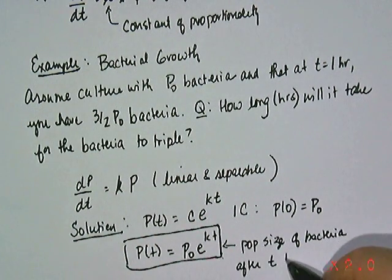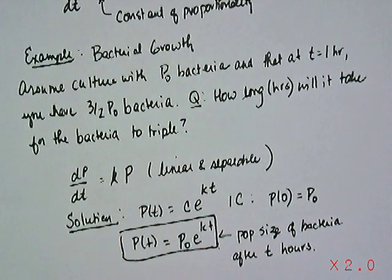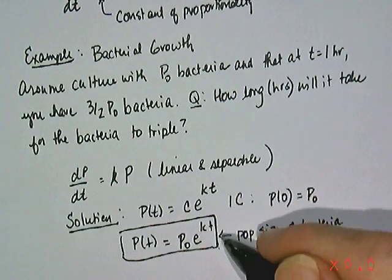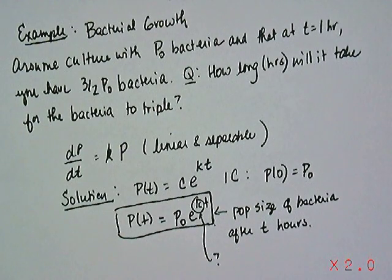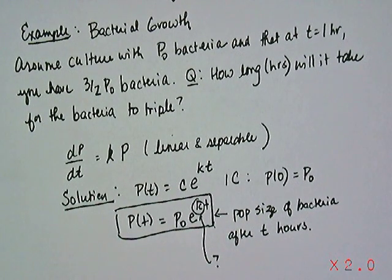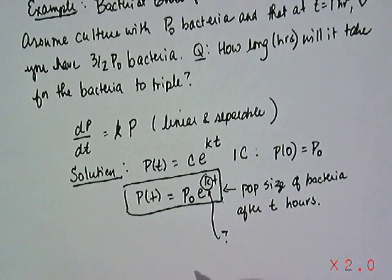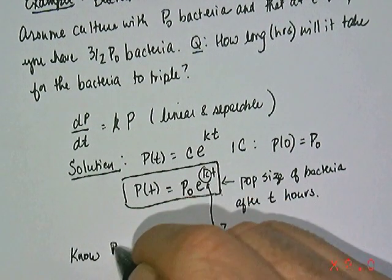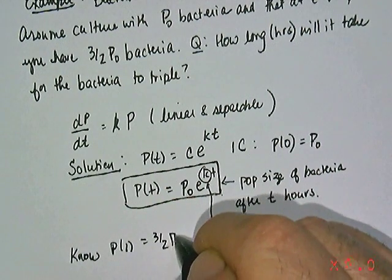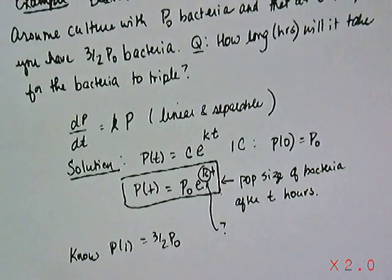So this then models and tells you how much bacteria you're going to have. But the model is not fully determined because you don't know what this K is. That's great, but you'd have to know what that constant of proportionality is. So typically you have to have some other data. Sometimes we call it ground truthing. You'd have to have something else other than the initial condition to fully define this growth model. Do we have it? Well, there was this piece of information up here that said that you do know that after one hour you get a particular quantity. So that's helpful.